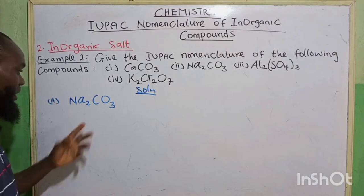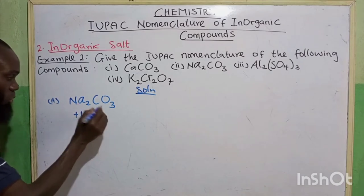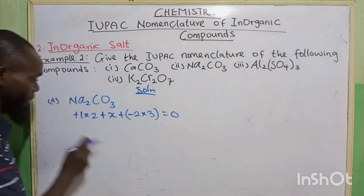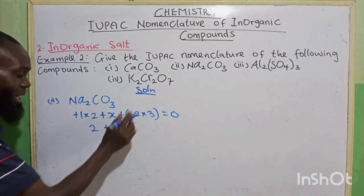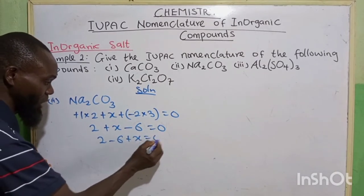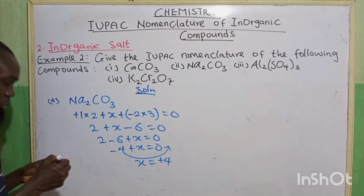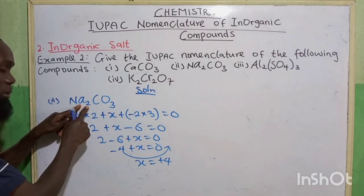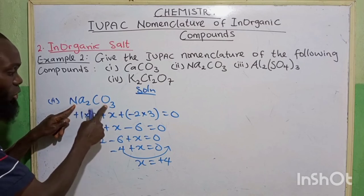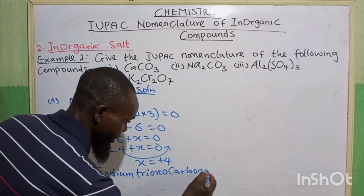The next one is Na₂CO₃. The valency of sodium is plus 1, multiplied by 2, plus carbon (X), plus oxygen minus 2, multiplied by 3, equals 0. So 1 times 2 gives 2, plus X, plus minus 2 times 3 gives minus 6, equals 0. Collecting like terms: 2 minus 6 plus X equals 0, giving minus 4 plus X equals 0, so X equals plus 4. Previously they used to say di-sodium, but now in modern chemistry you don't need to put di. The name is sodium trioxocarbonate(IV).